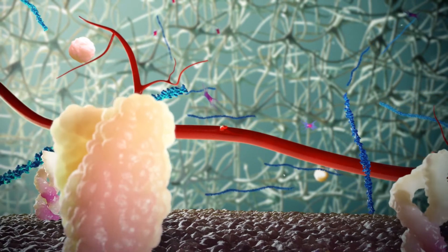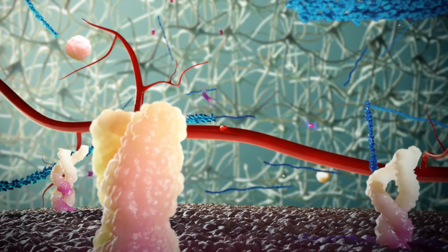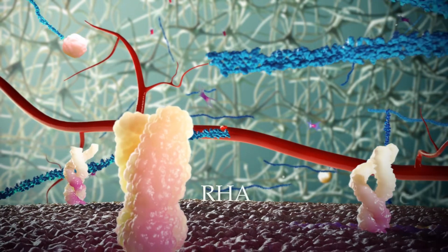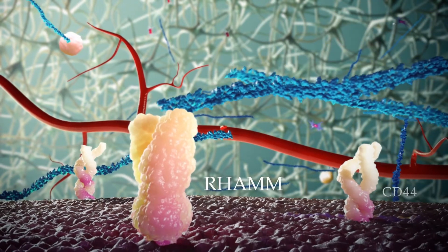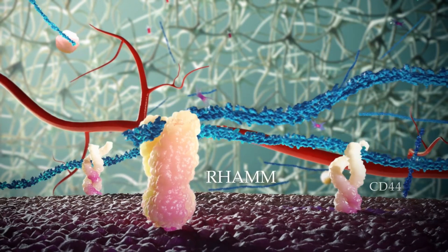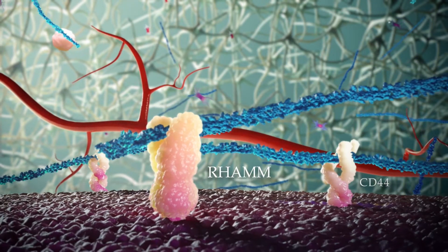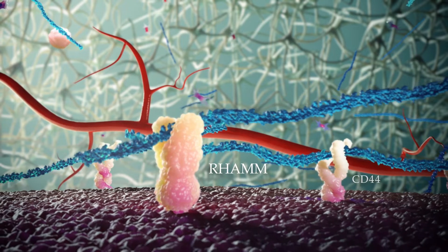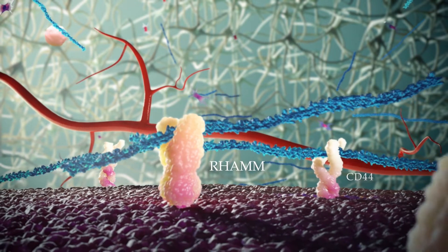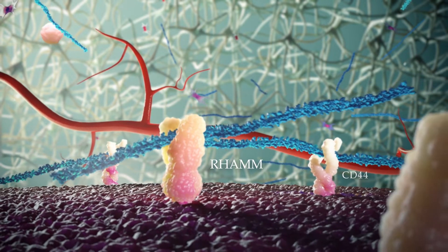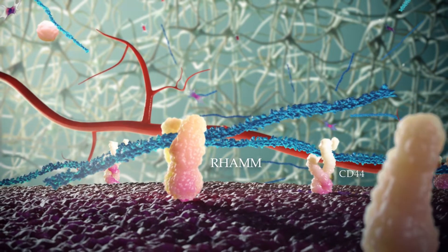The biological properties of hyaluronic acid are mediated through specific receptors such as CD44 and RHAMM that are expressed on the cell membranes.